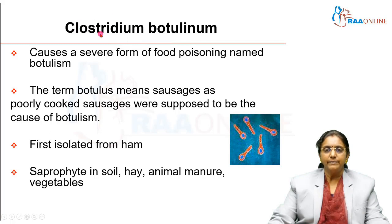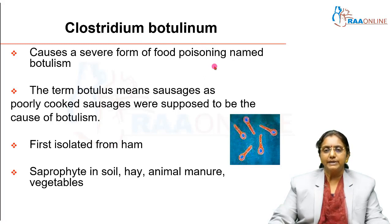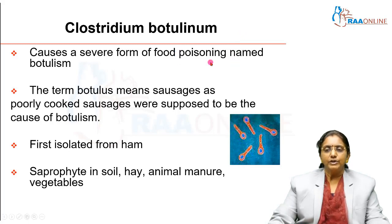The genus is Clostridium, and we know that many species of Clostridia exist. You have Clostridium perfringens, which causes gas gangrene; Clostridium tetani, which causes tetanus; Clostridium difficile, which causes antibiotic-associated diarrhoea; and Clostridium botulinum, which causes a severe form of food poisoning called botulism.